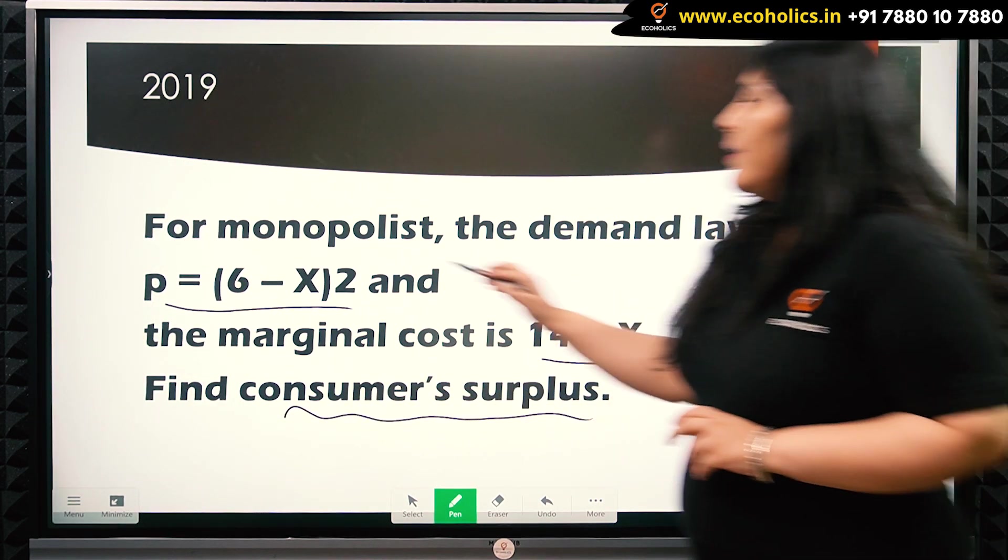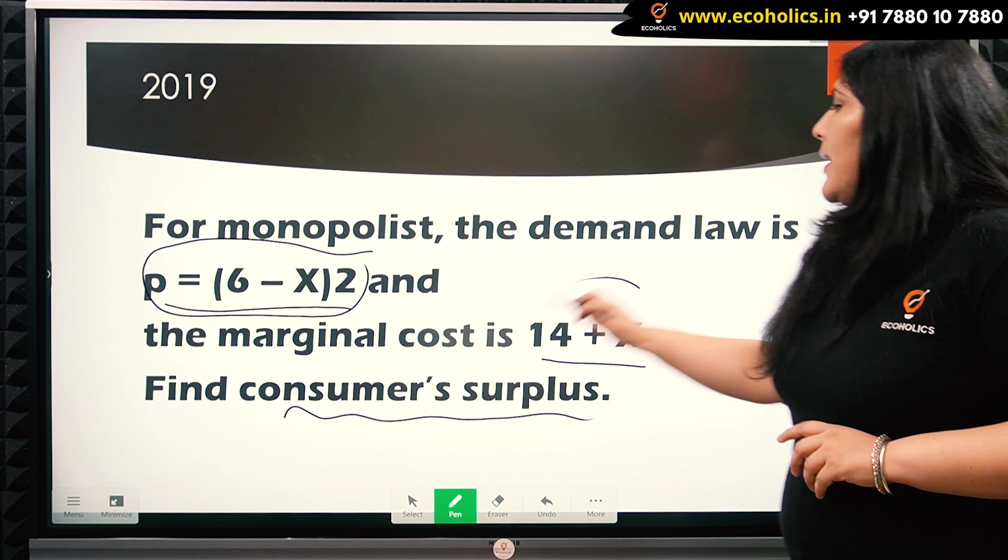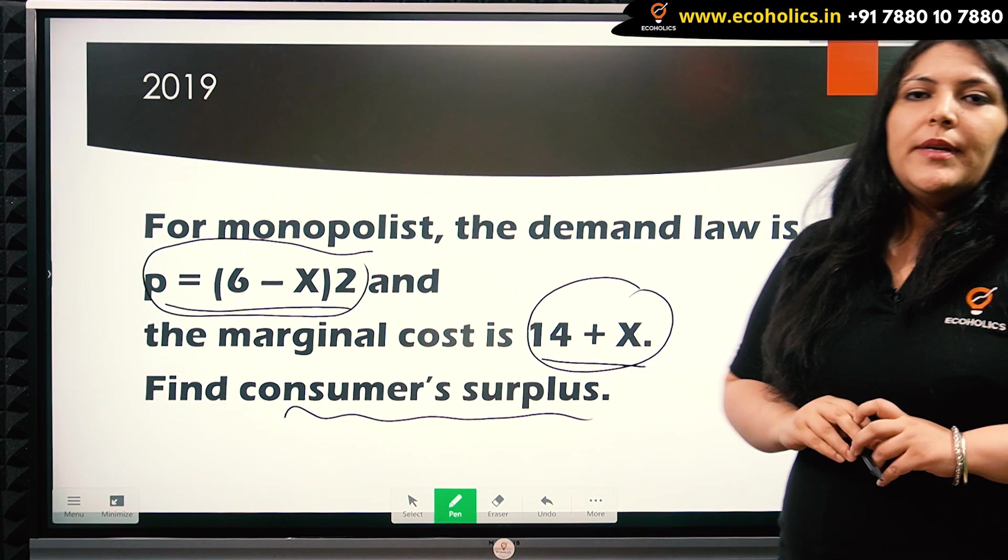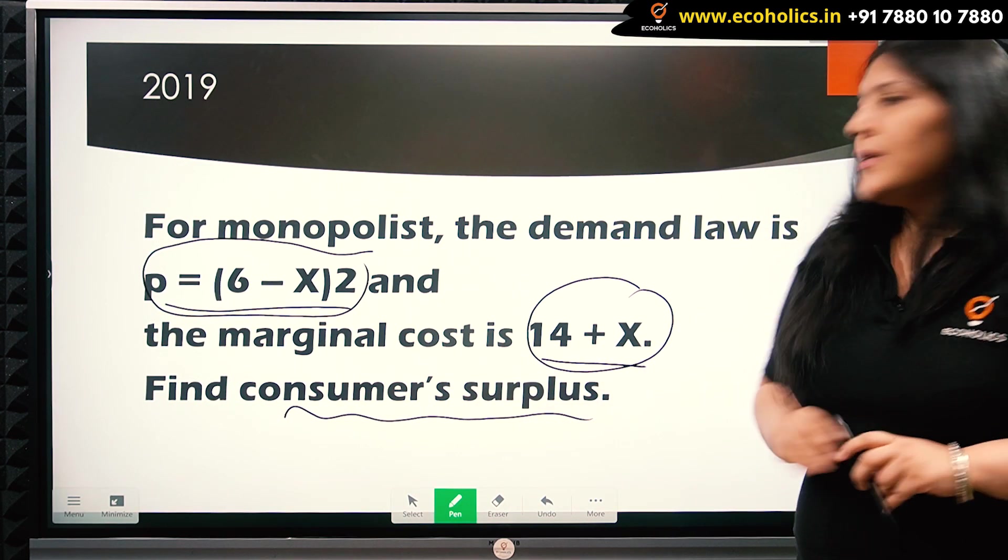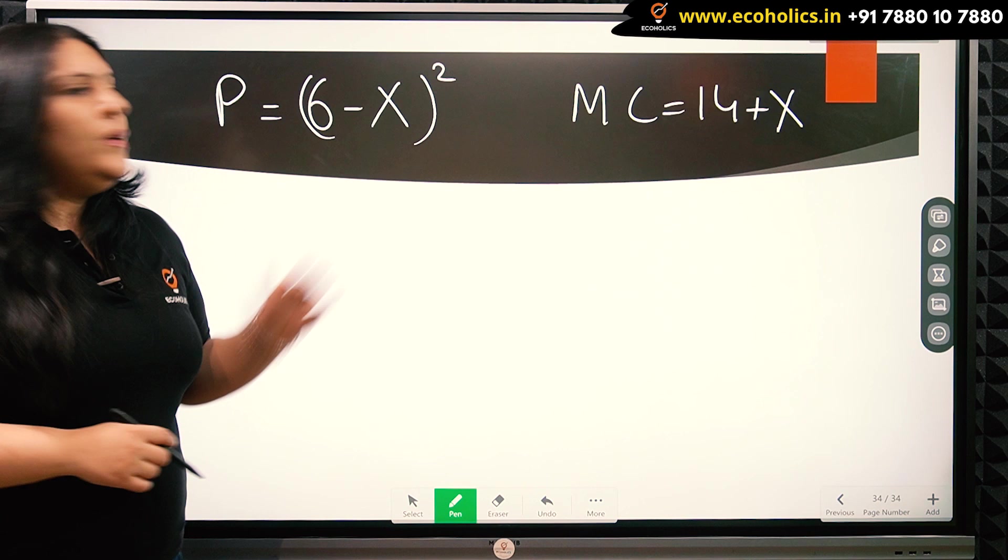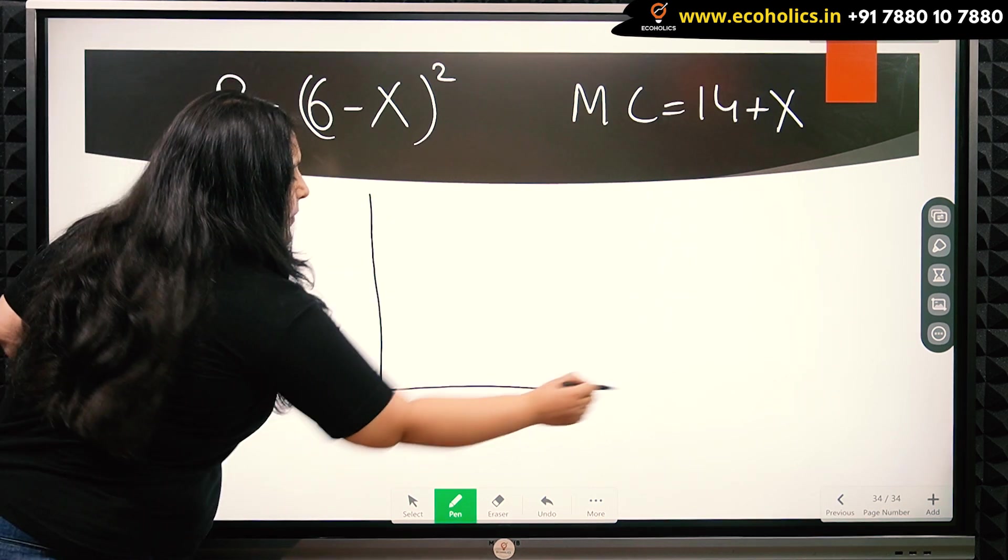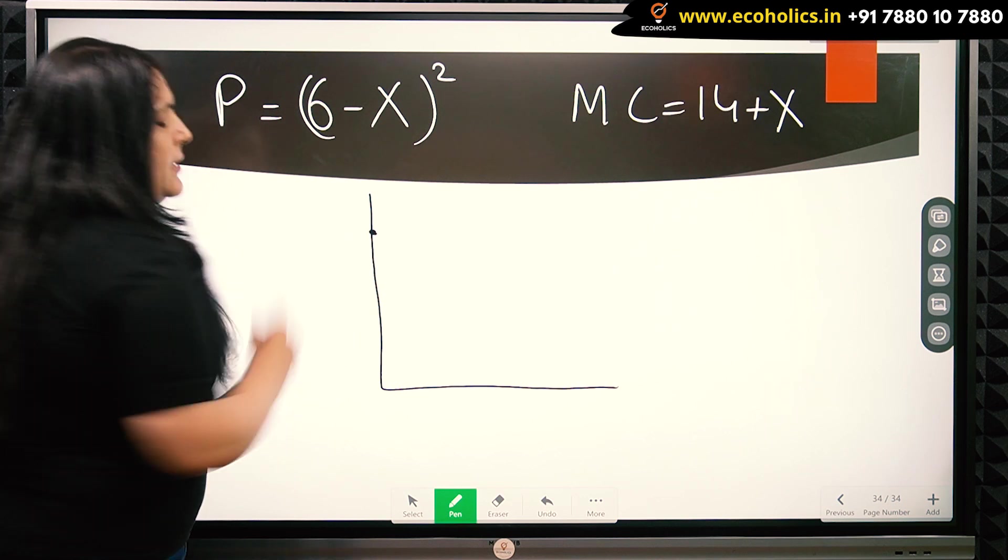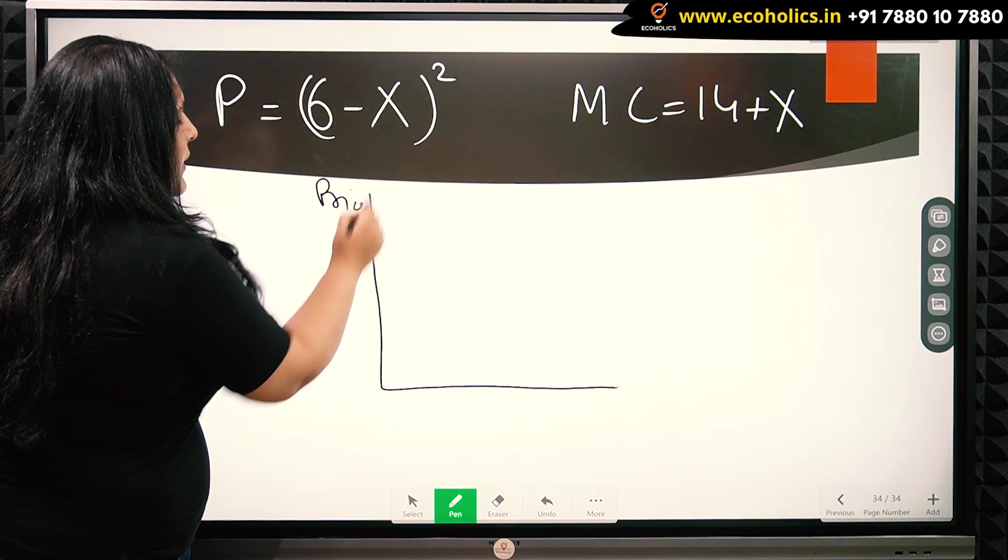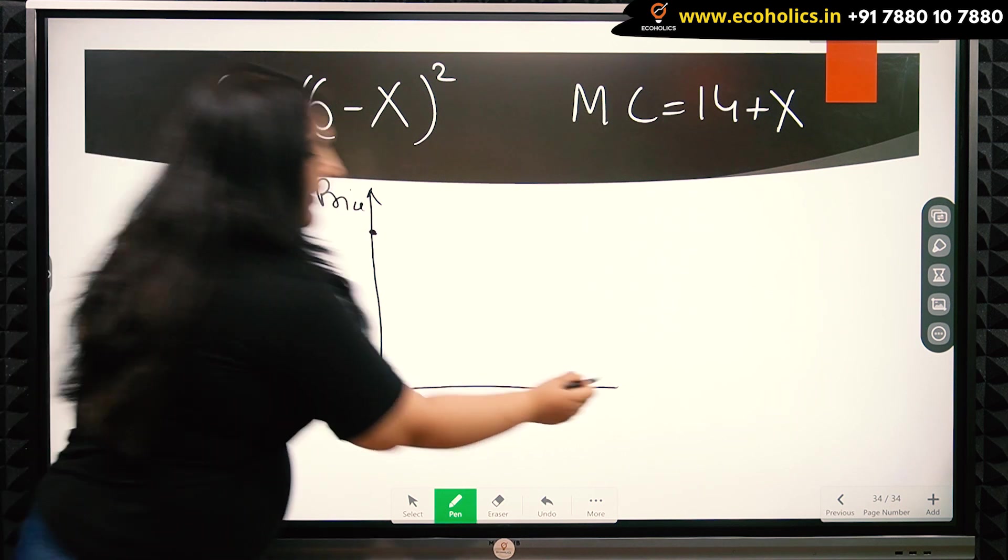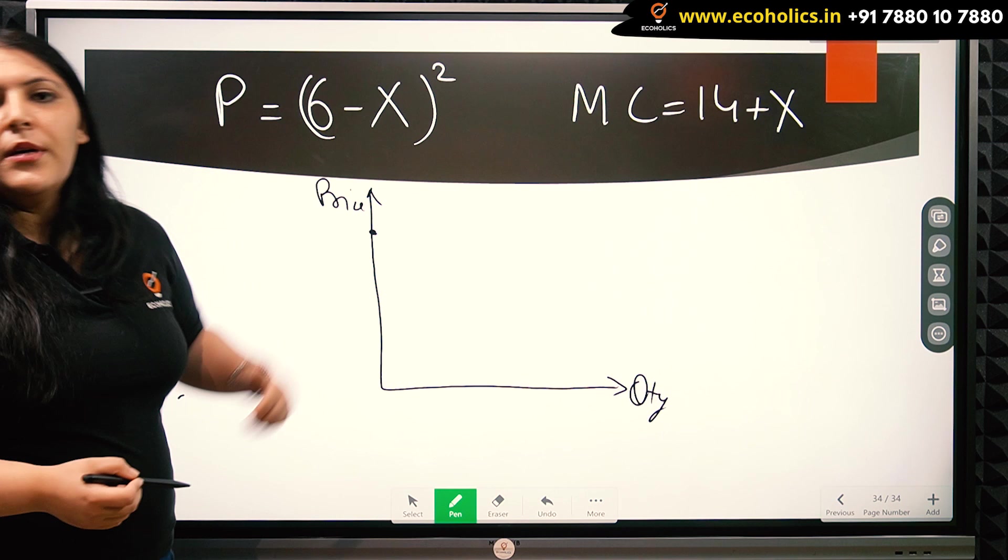So here we have the demand curve for the monopolist and also the marginal cost. We have to find the mathematical value of the consumer surplus. So we represent these values on a graph. The graph shows the price here and the quantity here, and we need to represent both curves.